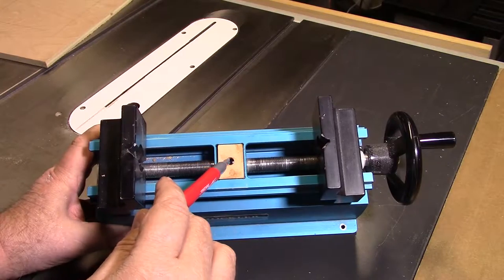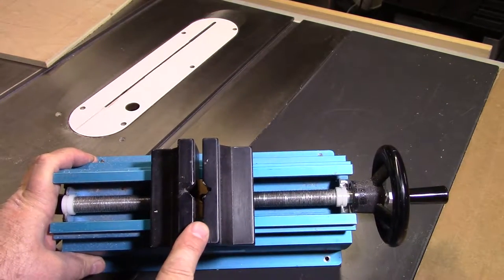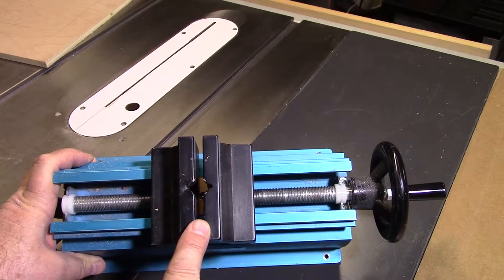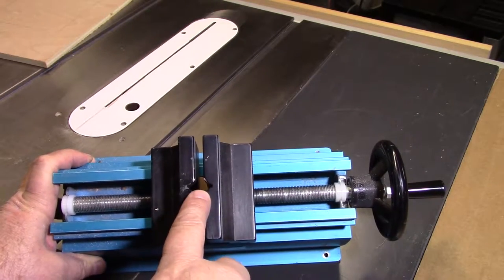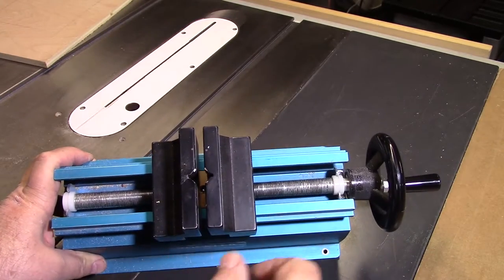Now as you can see when this is closed up, close to being completely closed, it's got these square shapes here that can hold your square pieces and can also hold your round pieces.